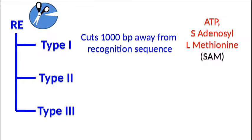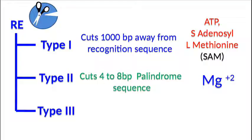Type 2 restriction enzymes cleave palindromic sequences which can be 4 to 8 base pairs in length. They require only magnesium ions for their function. Because of this, they are widely used in molecular biology.